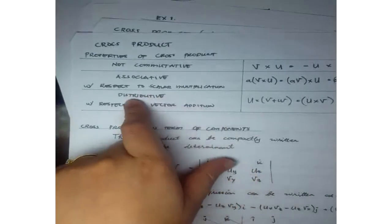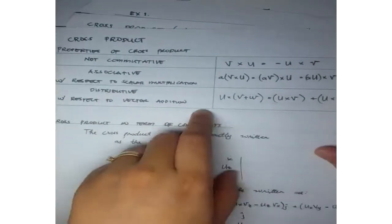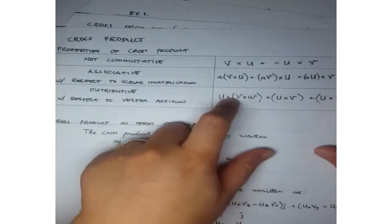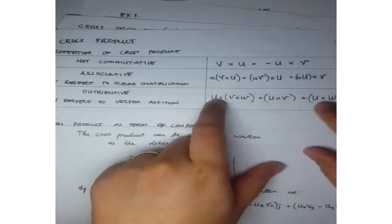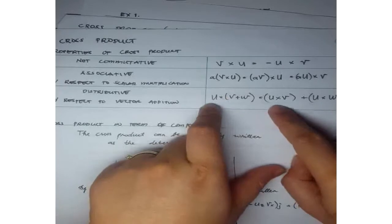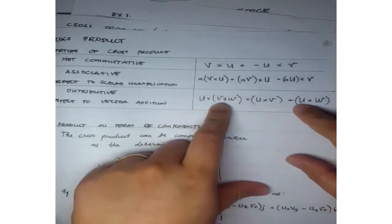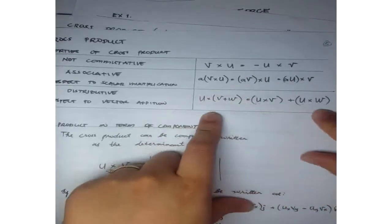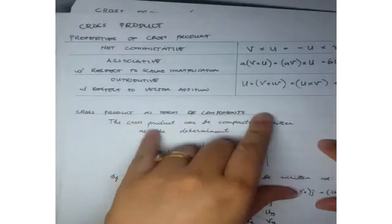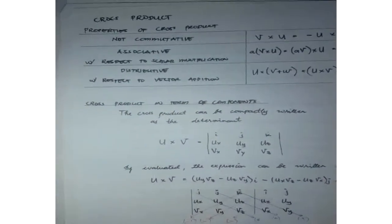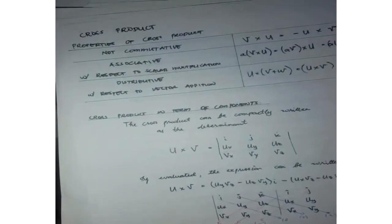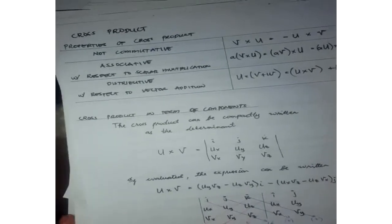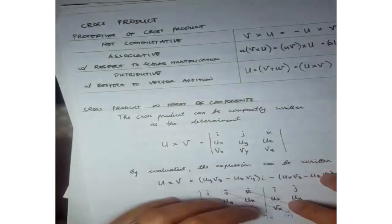It is also distributive with respect to vector addition: U cross (V + W) equals U cross V plus U cross W. The cross product, in terms of components, can be compactly written as a determinant.